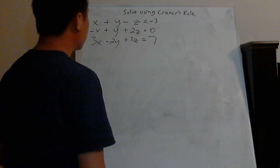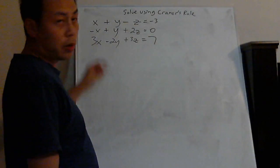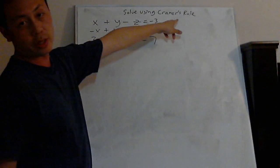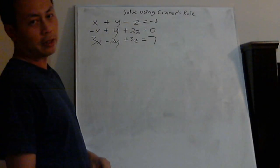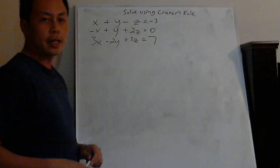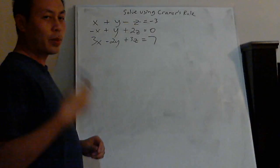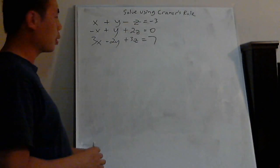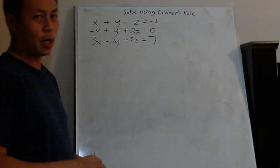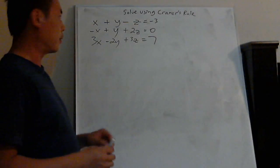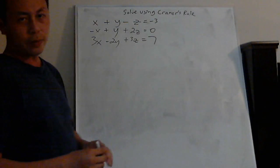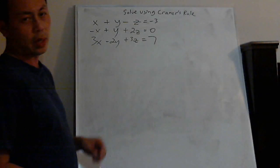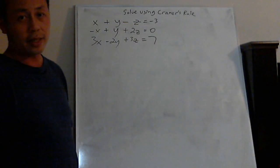Now we're going to learn how to solve a 3x3 system using Cramer's Rule. It's back to the topic of matrices. I think Cramer's Rule is actually one of the simpler ways — easier than the inverse in my opinion, which I'll explain in another video. Cramer's Rule is actually one of the simplest ways to solve a 3x3 system.